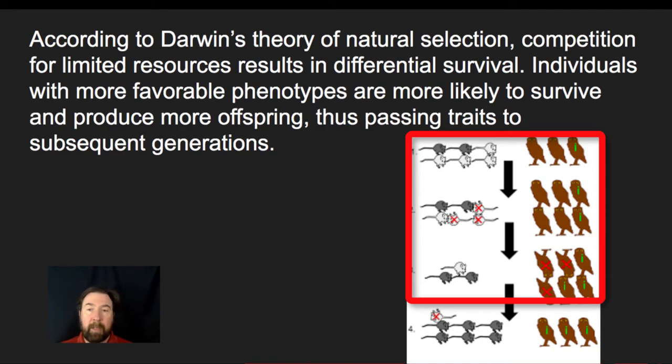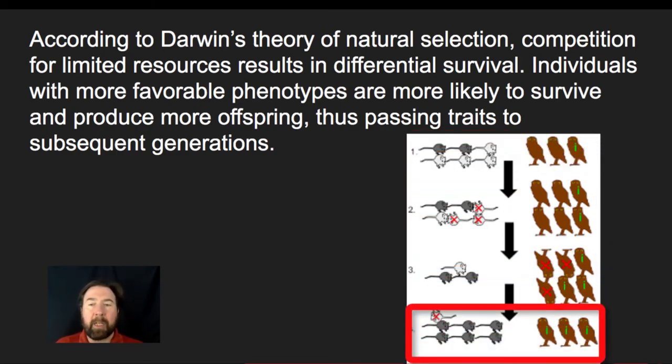Over time, we see a shift in those dark gray mice. As that mouse population shifts, eventually the owls that are not as good at seeing start to struggle to get enough energy. Over time, that provides a selective pressure back on the owls such that we see an increase in owls that have exceptional ability to see in order to survive and reproduce over time.